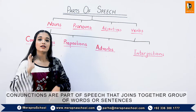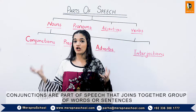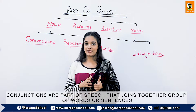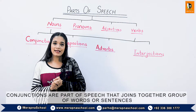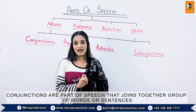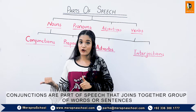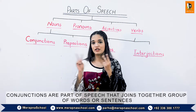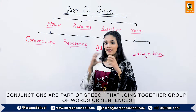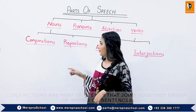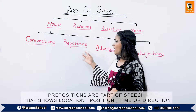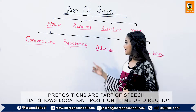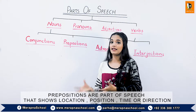Conjunctions, like their name, show conjunction — they join two sentences, two words, or two phrases. For example: 'I am a girl, but my brother is a boy.' These are two sentences — 'I am a girl' and 'My brother is a boy' — joined together with 'but.' So the word 'but' is a conjunction.